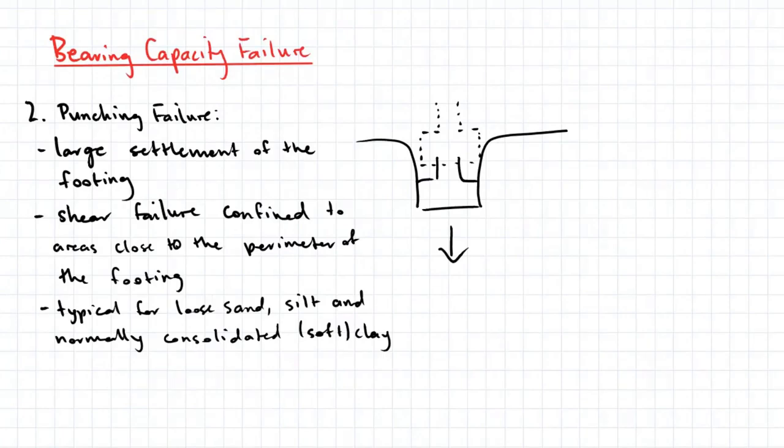Punching failure causes large settlement of the footing. The shear failure is confined to areas in close proximity to the perimeter of the footing, and this type of failure is typical for loose sand, silt, and normally consolidated clay.